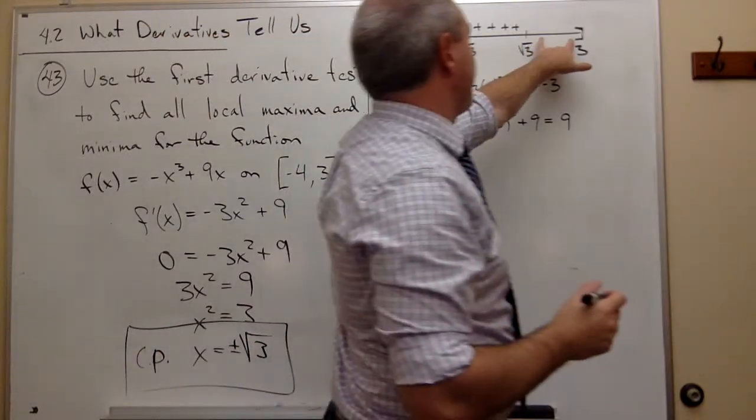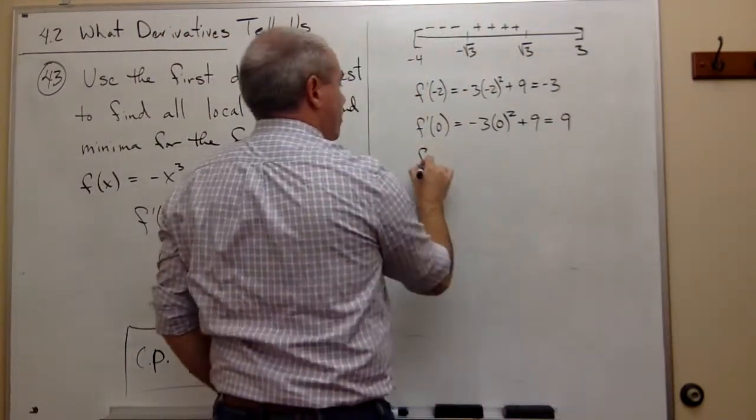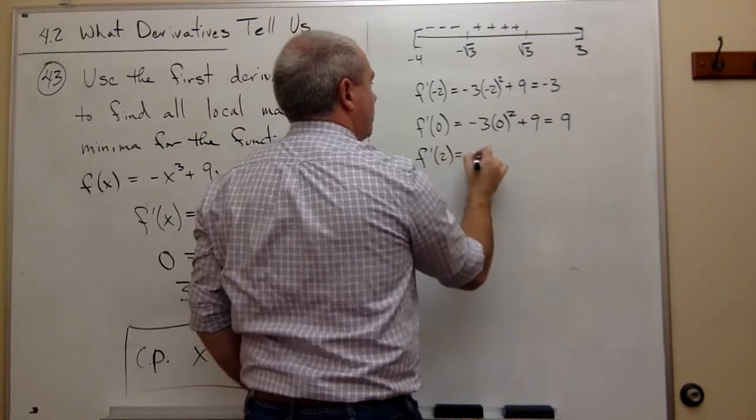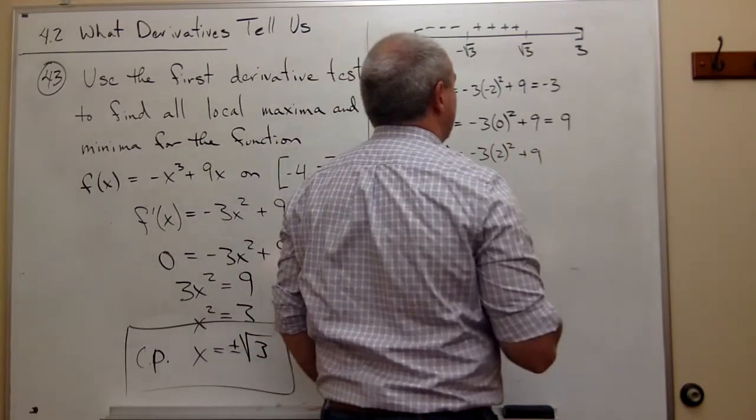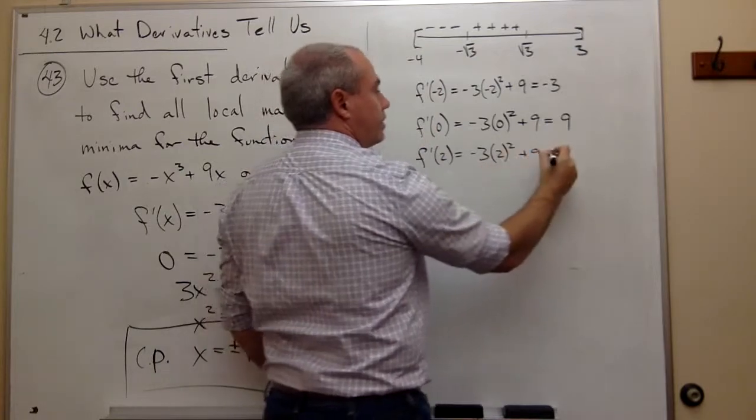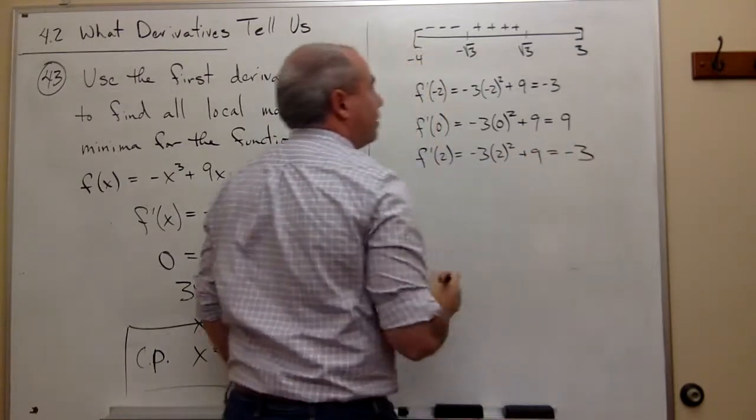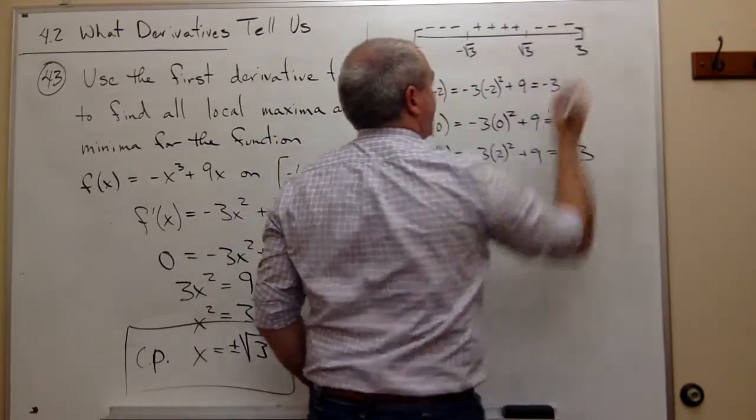Finally, I can plug in something up here, like 2. So f'(2) would be -3 times 2² + 9. And again, I'm going to just get -3, which gives me negatives.